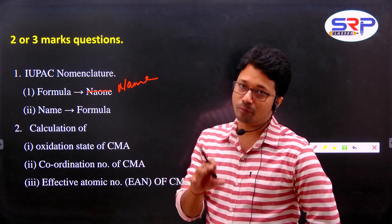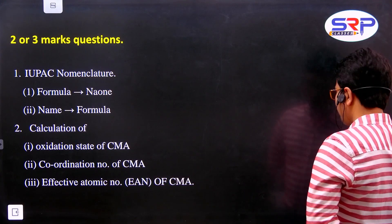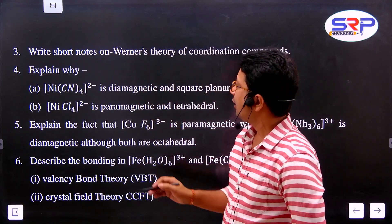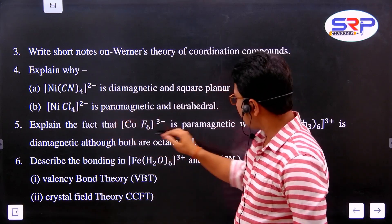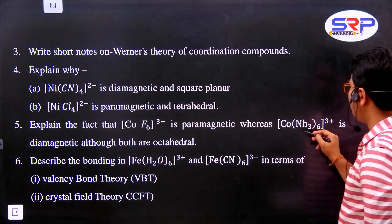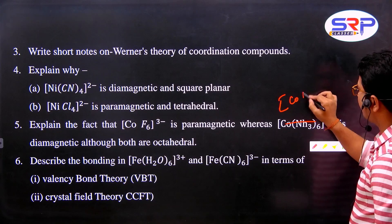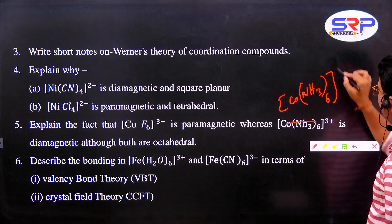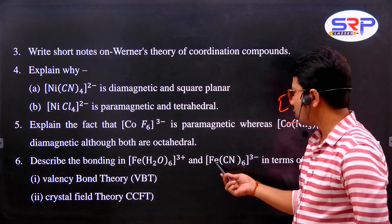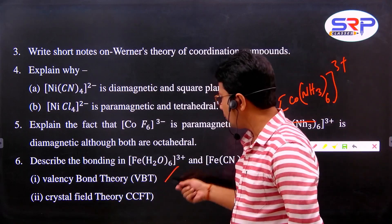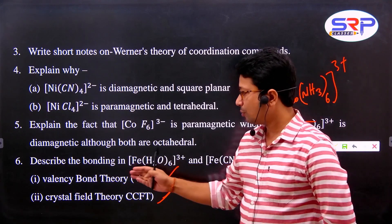IUPAC naming-related questions - practice 1-mark and 2-mark questions. Short notes on coordination theory. Explain which complexes are diamagnetic or paramagnetic and tetrahedral. Explain: [CoF6]3- is paramagnetic whereas [Co(NH3)6]3+ is diamagnetic, although both are octahedral. Also: describe the bonding in [Fe(H2O)6]3+ and [Fe(CN)6]3- in terms of valence bond theory and crystal field theory.